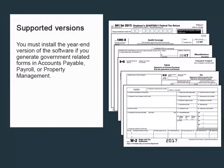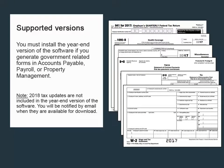If you generate any government-related forms in the Accounts Payable, Payroll, or Property Management applications, you must install the year-end software. Take note that the year-end version does not include any 2018 tax updates. Sage will email you a software notice when tax updates are ready for download.